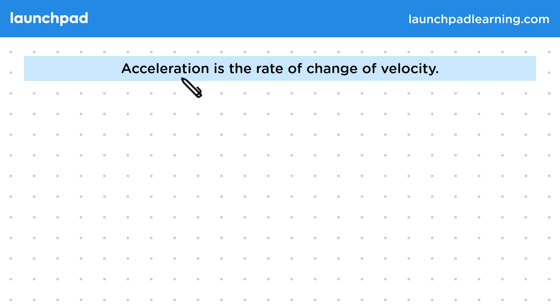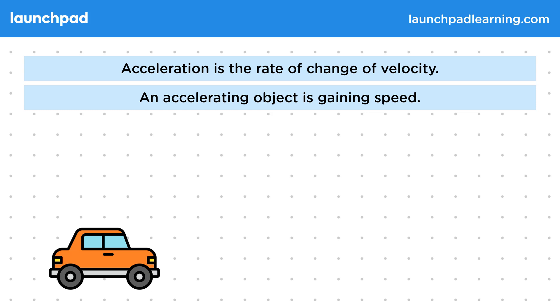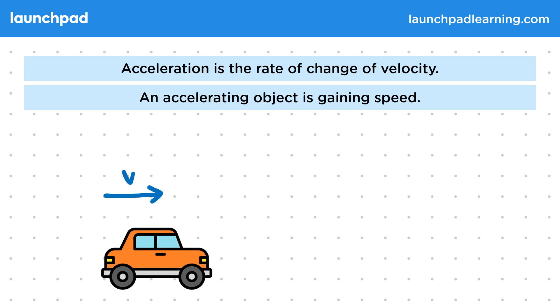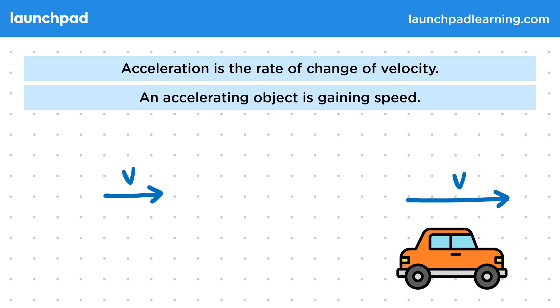So what do we mean by the term accelerating? Well, an accelerating object is gaining speed. Let's look at an example of an object that's accelerating. As we watch this car move, we see that it starts off moving slowly and then ends moving quickly. In other words, it speeds up.